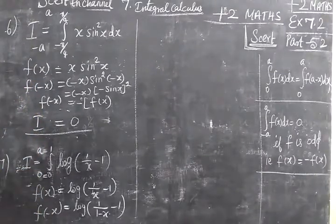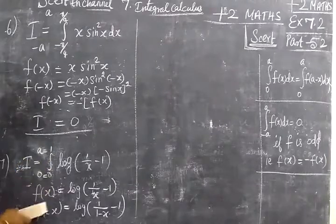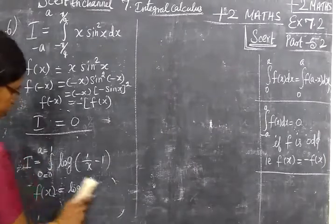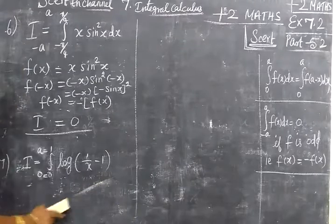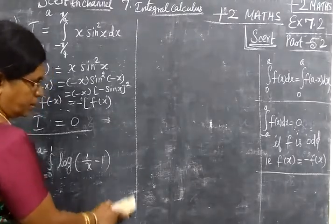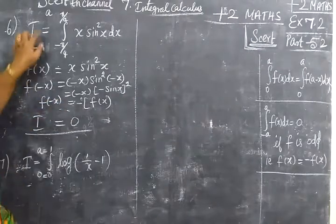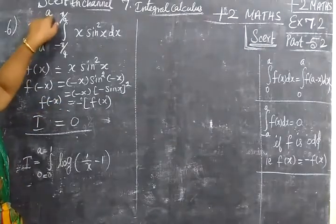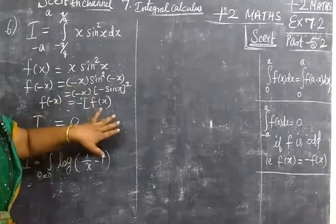You can't write like this because you have 0 to a formula. You have 0 to a formula. I told you in the exercise, limit of integration formula. Now minus a to a, the method is equal to even function or odd function.